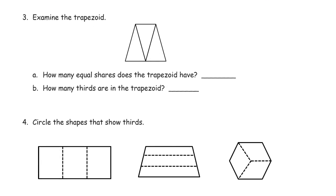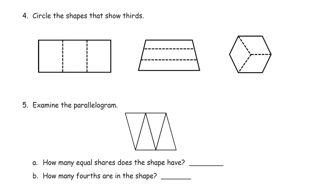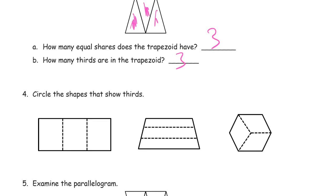And now it says examine this trapezoid. Okay, I'm looking at it. How many equal shares does a trapezoid have? Well, these are all equal, aren't they? Because there's a triangle and a triangle, and here's an upside-down version of the same triangle, so they're all the same. And there's three of them, so it's three equal shares. How many thirds are there? Three. Because each one would be one third. Three.